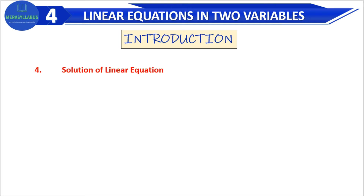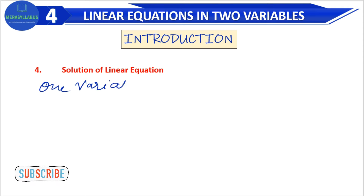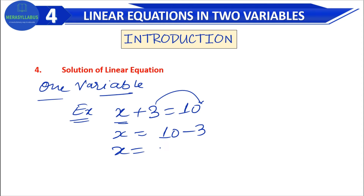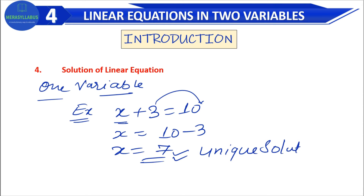Now comes the solution of a linear equation. In one variable — for example, x plus 3 is equal to 10. When we solve this, it's one variable. I keep x on one side and move 3 to the other, so it becomes minus 3, giving x equals 7. That means whenever we solve a linear equation in one variable, there will always be one unique solution.